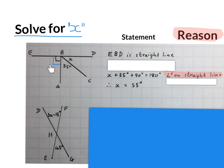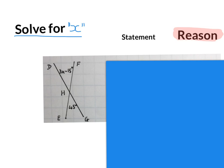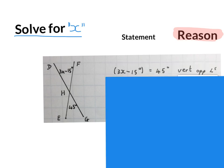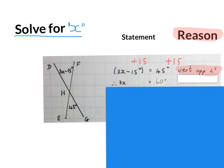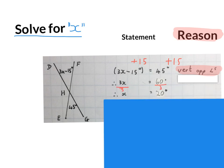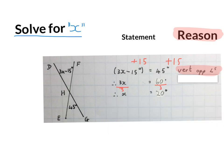Here is our second problem. They're still asking solve for X. Let's make statements and write reasons. One way of answering it is to write 3X minus 15 degrees equals 45 degrees, because those are vertically opposite angles and they are equal. Using equations, we add 15 on both sides to get 3X equals 60 degrees, then divide by 3 on both sides to get X equals 20 degrees. In geometry you do not have to show all your working out, but I prefer to use a pencil to help avoid mistakes. Please stop the video and get your brain around this problem.